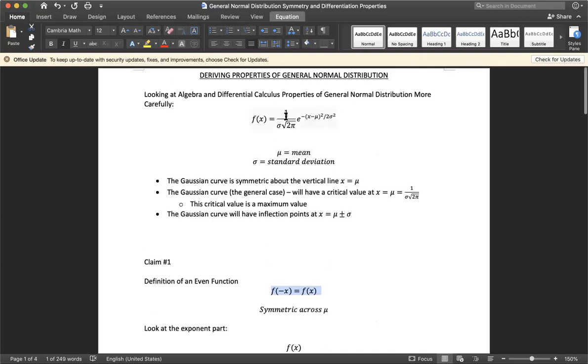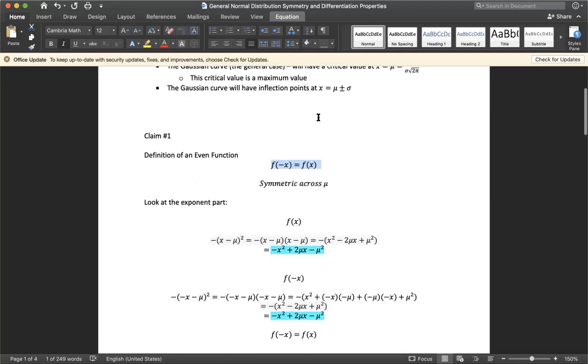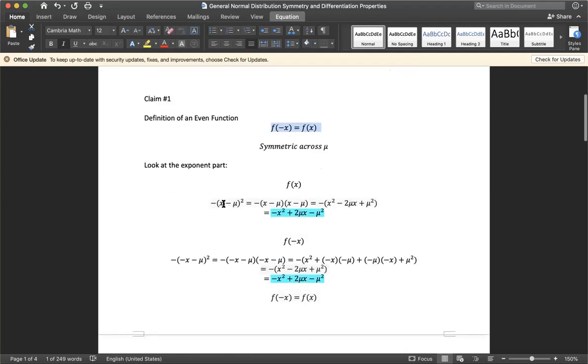We can ignore the constant term being multiplied. We just have to care about the exponential part since the only thing being changed is the variable in the quadratic term. If we plug in a positive x and a negative x, we get two identical terms, so we've concluded the function is even and therefore symmetric.